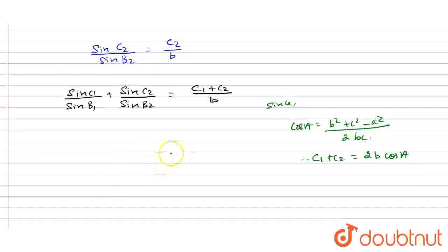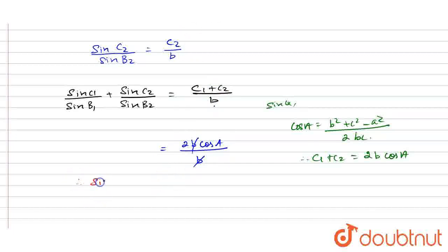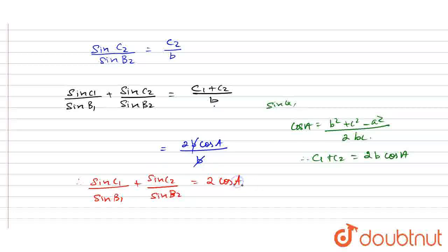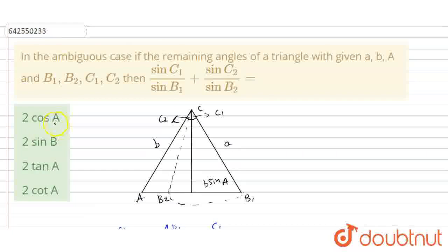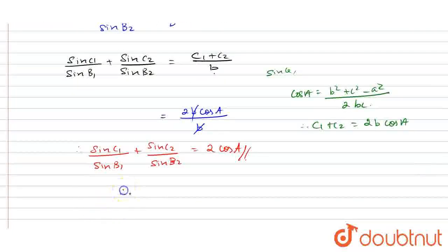Now I am going to substitute the value. So the value equals 2B cosA divided by B — the B cancels. Therefore, sinC1 divided by sinB1 plus sinC2 divided by sinB2 equals 2 cosA. This is the answer. If we see in our answer options, option A is the correct answer.